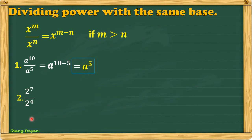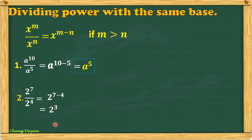Number two: 2 raised to the seventh power all over 2 raised to the fourth power. Again, subtract the exponents: 7 minus 4 gives us 2 cubed. It's not yet the final answer — you have to multiply 2 three times itself, so 2 times 2 times 2, and we'll get 8.